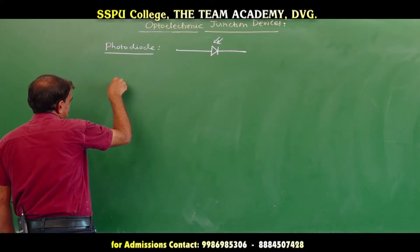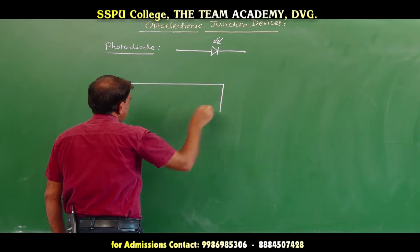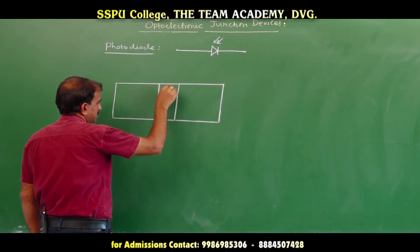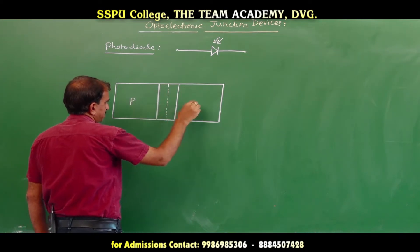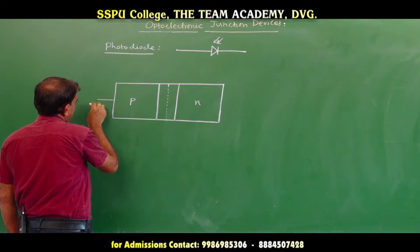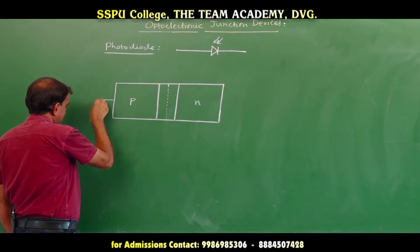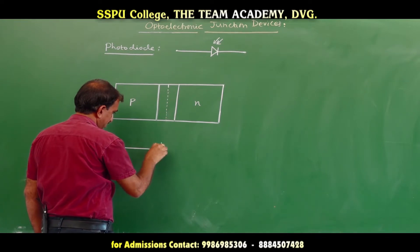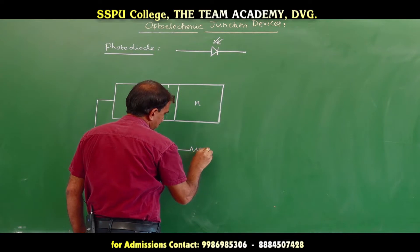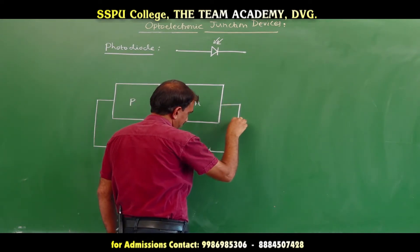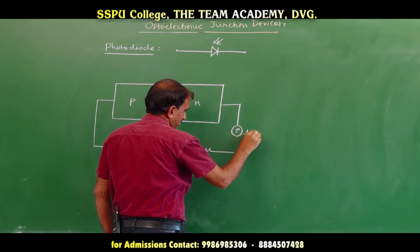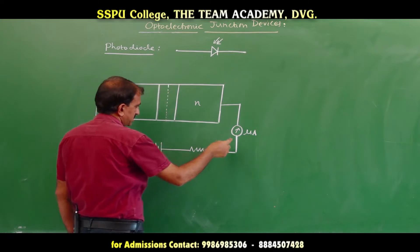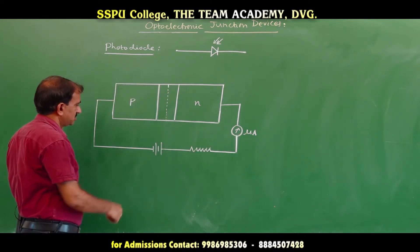This PN junction diode has two semiconducting materials: one is P-type material and another is N-type material, with a depletion region in between. The PN junction is connected to a battery so that it is in reverse bias — P-type connected to the negative terminal and N-type to the positive terminal — through a resistance and a microammeter. A small current is produced and measured using this microammeter.